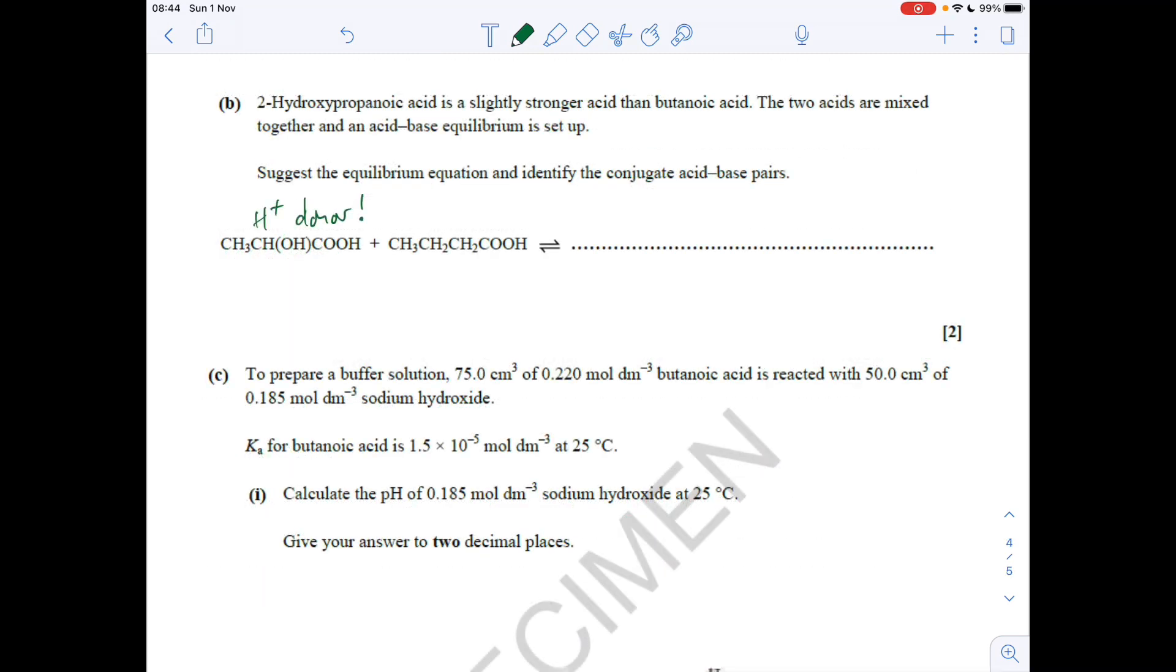Moving on to part B: we're told that 2-hydroxypropanoic acid is a slightly stronger acid than butanoic acid. So we've got these two acids reacting together. Because this is slightly stronger, it's going to donate its proton to this one, so that's going to give us those two products there. So this has donated this proton and it's given it to this, so you can see we've lost it there so we've got a negative charge. This has gained the proton so it becomes positively charged.